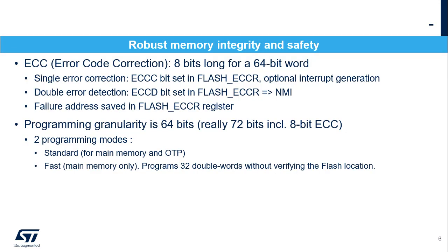The flash memory embeds an error code correction function to ensure robust memory integrity and safety. The ECC is 8 bits long for a 64-bit word. In case of a single error, it is corrected; the ECCC bit is set in the flash ECC register, and an interrupt is generated if enabled. In case of a double error, it is detected but not corrected; the ECCD bit is set in the flash ECC register, and a non-maskable interrupt is generated. When an ECC error is detected, the failure address is saved in the flash ECC register.